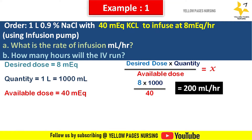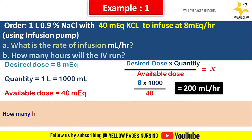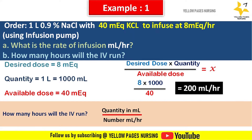How many hours will the IV run? That is quantity in ml divided by ml per hour: 1000 ÷ 200 = 5. The IV runs for 5 hours.